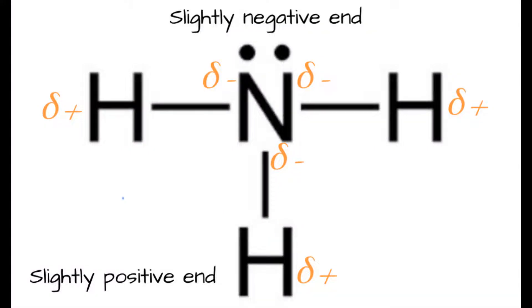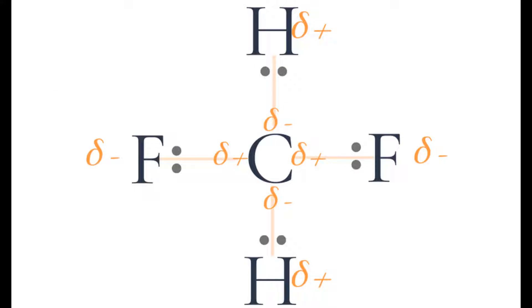The overall molecule is polar if the atoms are arranged around the central atom in such a way that there is a separation of charges across the entire molecule, leaving a slightly positive end and a slightly negative end. This occurs when the atoms are spread unevenly around the central atom, which happens when there are lone pairs of electrons, or when the atoms are spread evenly around the central atom but there is more than one type of atom bonded to the central atom. In both cases, the molecule is not symmetrical, so the dipoles do not cancel and the molecule is polar.